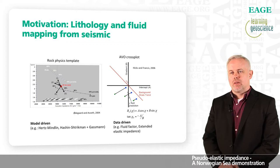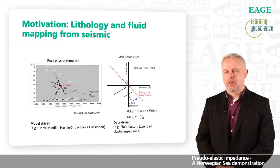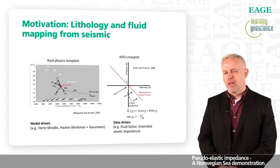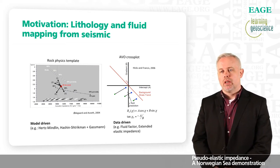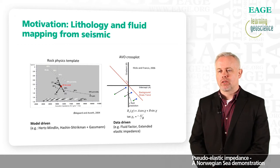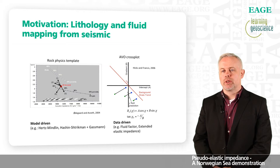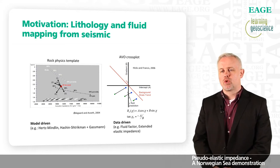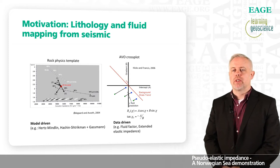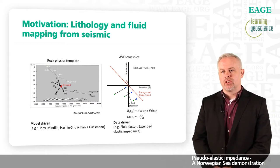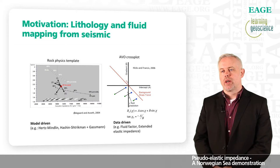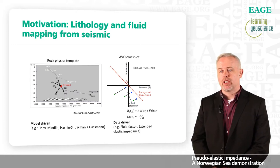Just to start with a little motivation: what we really want to do is to map lithology and fluids from the seismic data. There are different approaches to this. Some people prefer a more model-driven approach. Personally, I have used rock physics models or templates during seismic characterization, building up rock physics models in the seismic domain — for example, VP/VS ratio versus acoustic impedance — to constrain seismic inversion or help interpret inversion data. Another approach would be data-driven: looking at deviations away from some background trends, such as the fluid factor, which is a measure of the distance away from a background trend in the AVO crossplot of intercept versus gradient.